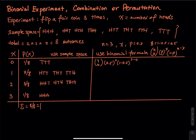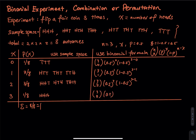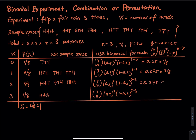Continuing: 3 choose 1, times 0.5 to the first, times (1 minus 0.5) to the (3 minus 1). Then 3 choose 2, times 0.5 to the second, times (1 minus 0.5) to (3 minus 2). And the last one, 3 choose 3, times 0.5 to the third, times (1 minus 0.5) to (3 minus 3). The results are 0.125 = 1/8, 0.375 = 3/8, 0.375 = 3/8, and 0.125 = 1/8. The sum of the decimals equals one.